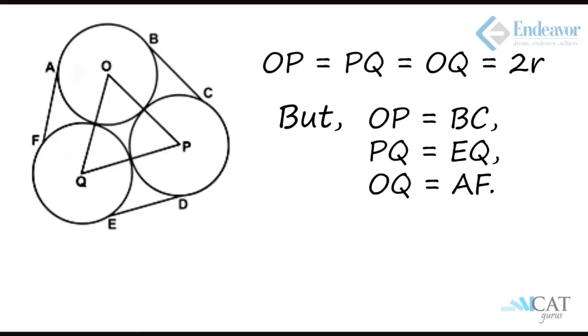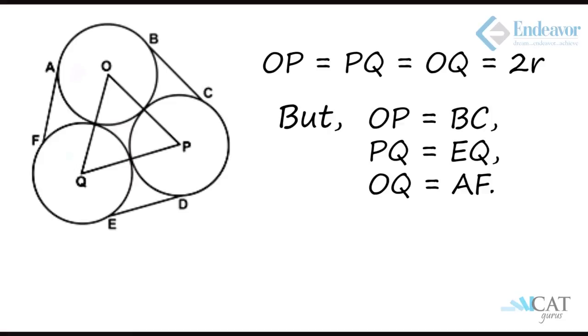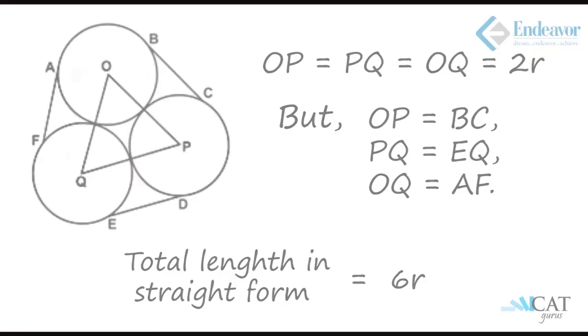Such a distance is repeated three times on all three sides. Hence the total length in the straight form will be 2r plus 2r plus 2r, that is 6r.